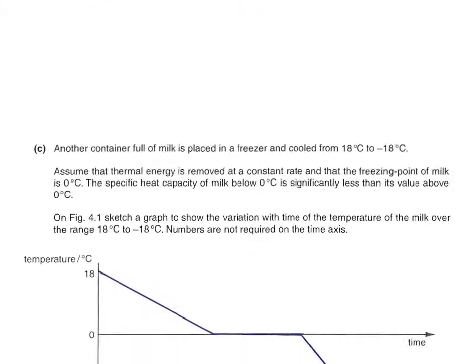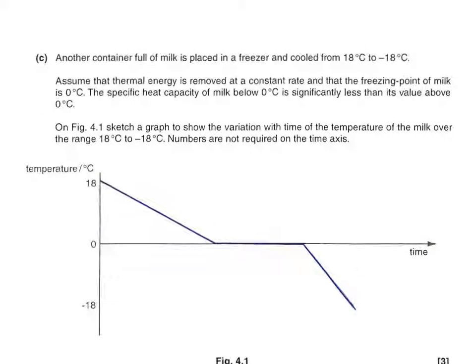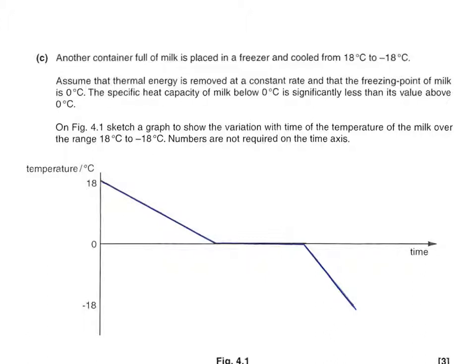Part C is perhaps the interesting question. Another container of milk is placed in a freezer and cooled from 18 to -18°C. Assume thermal energy is removed at a constant rate, and the freezing point of milk is 0°C, with specific heat capacity below 0°C significantly less than above. If we're taking energy out at a constant rate, when we've got a liquid the temperature drops at a constant rate—loss of kinetic energy of the particles. Then while it's freezing, the temperature remains constant—it's the potential energy changing there. The key point is that the temperature remains constant.